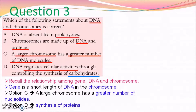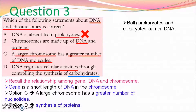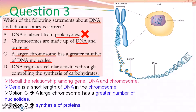In question 3, we need to recall the relationship among gene, DNA, and chromosome. For option A, which is wrong: prokaryotes — for example bacteria — although they do not have a true nucleus (they do not have a nuclear membrane), they still have DNA molecules. For option B, which is correct: as shown in the diagram, DNA coils together with protein to become a dense structure called a chromosome. You can recall this concept from the chapter of cell division.